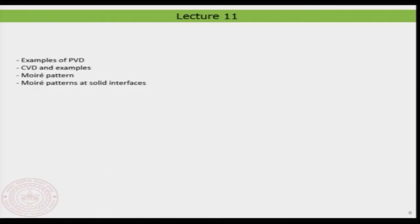Hello, welcome back to the lectures. Today we have lecture 11. In continuation to the previous lecture, I will show you some examples made using physical vapor deposition and understand its capabilities. Then we will look into chemical vapor deposition and familiarize some examples. I will also introduce something called the Moiré pattern — an interesting pattern normally observed at solid interfaces, and also in daily life.